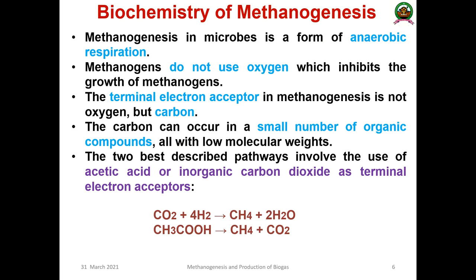The biochemistry of methanogenesis: methanogenesis in microbes is a form of anaerobic respiration where methanogens do not utilize oxygen. Oxygen inhibits the growth of methanogens. The terminal electron acceptor in this respiration is not oxygen but carbon. Carbon can be acquired from a small number of organic components with low molecular weight. The two best pathways involve acetic acid or inorganic carbon dioxide as terminal electron acceptors. Carbon dioxide combines with hydrogen to produce methane and water; acetic acid produces methane and carbon dioxide.